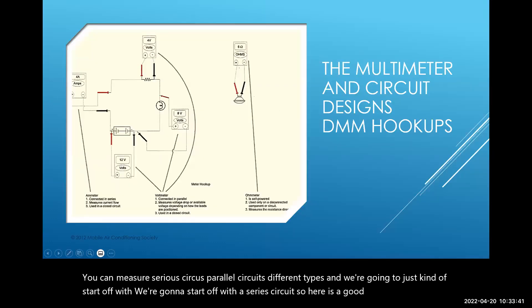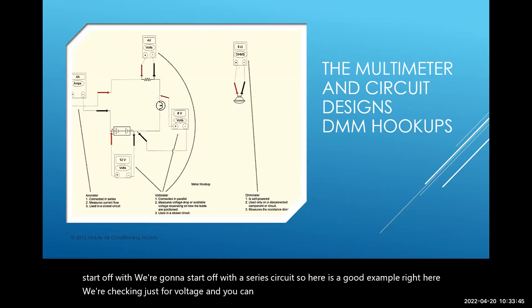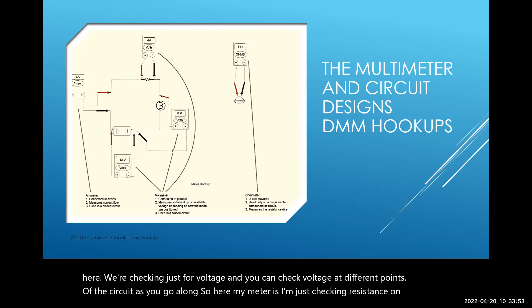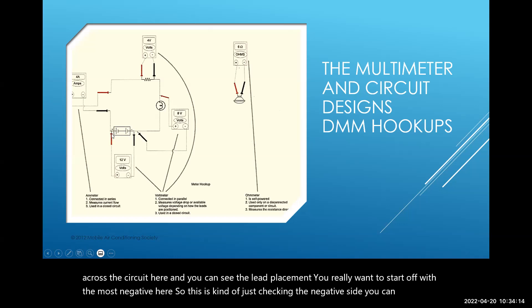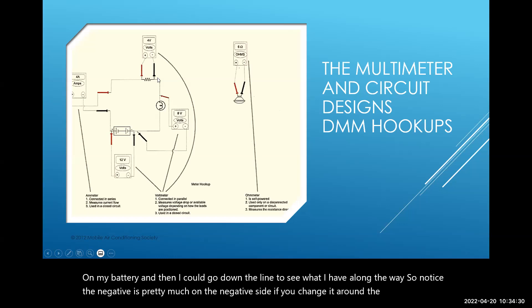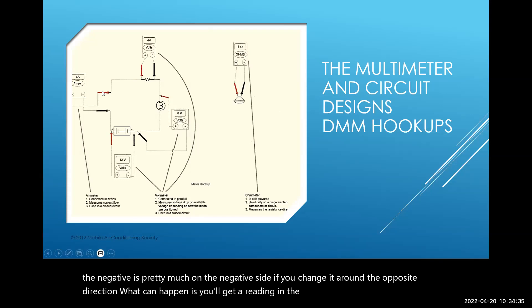Here's a good example right here. We're checking just for voltage, and you can check voltage at different points of the circuit as you go along. Here my meter is checking resistance on this bulb over here. It looks like a headlight bulb. And then we actually have the meter checking for voltage across the circuit here. You can see the lead placement. You really want to start off with most negative here. If you change around the opposite direction, you'll get a reading in the negative.